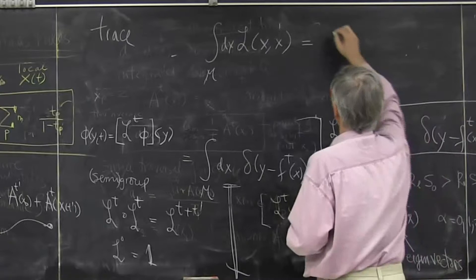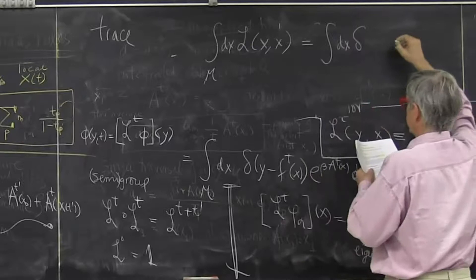And we have explicit formula for this. It's dx, the right delta function, x minus f of x.